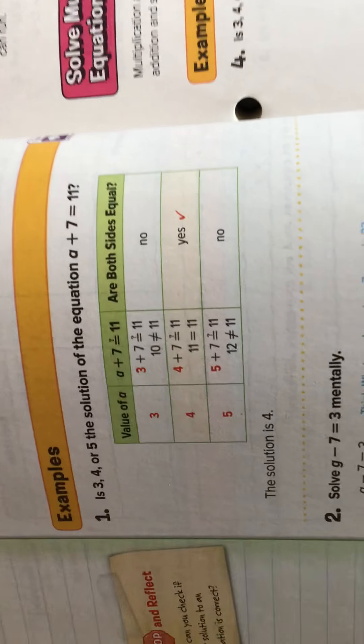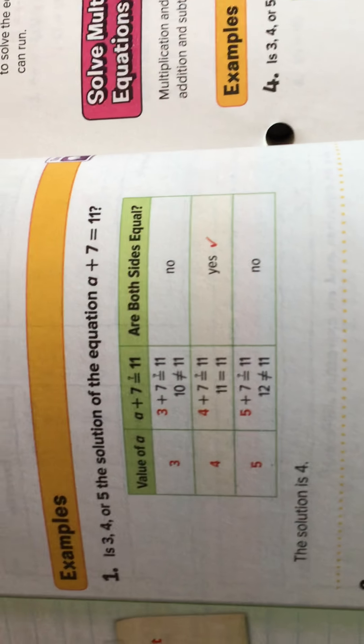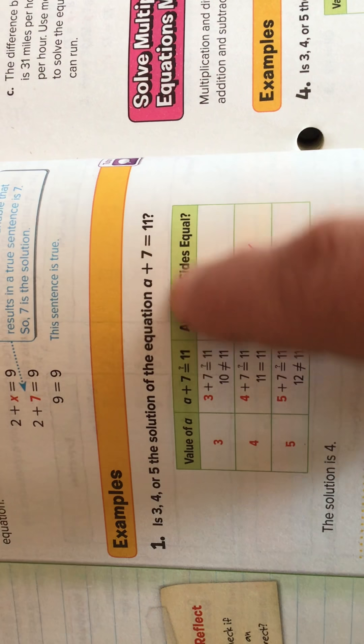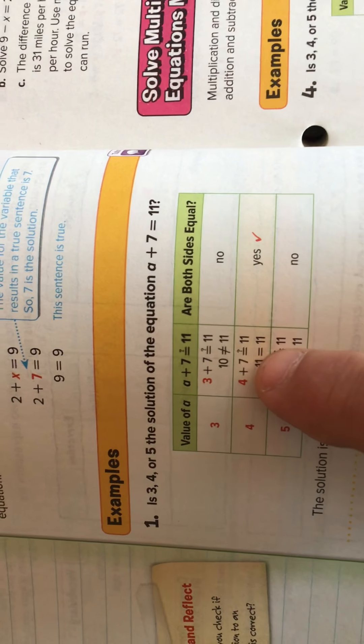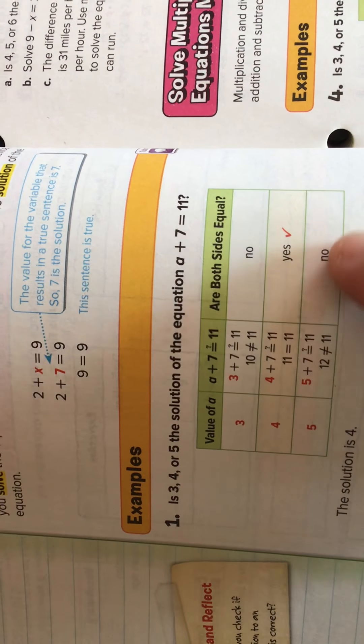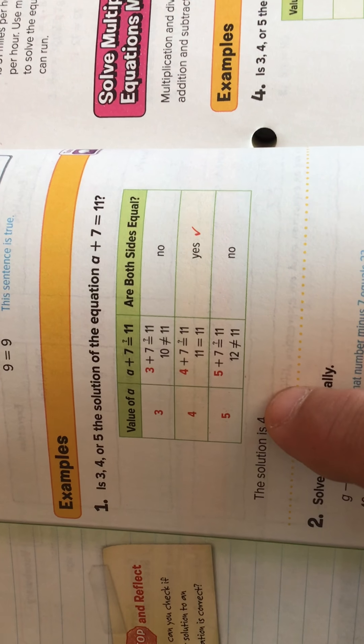Continuing our lesson. Is 3, 4, or 5 the solution of the equation a plus 7 equals 11? Well, let's try it. 3 plus 7 is 10. Not true. 4 plus 7 is 11. Yes, that's true. 5 plus 7 is 12. Not true. So, the solution is 4. In fact, a equals 4.